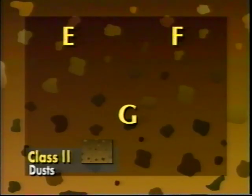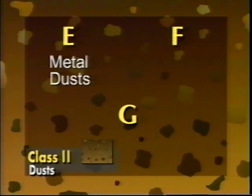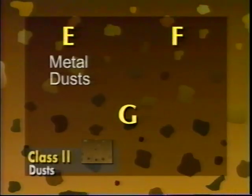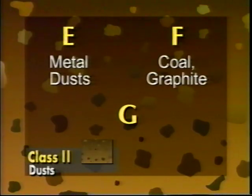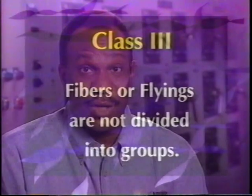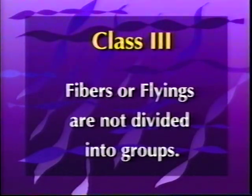For Class 2 dust, the groups are E, F, and G. Group E consists of metal dusts such as aluminum and magnesium, which can be electrically conductive. Because of this, Group E dusts are always considered Division 1, and they are the only Class 2 group that are Division 1. Group F consists of coal, graphite, and similar dusts. Group G consists of grain, plastic, and chemical dusts. For Class 3 fibers and flyings, the hazards are considered similar and aren't divided into groups.